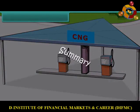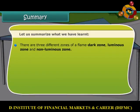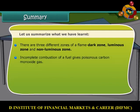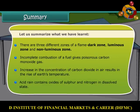Let us summarize what we have learned. There are three different zones of a flame: the dark zone, luminous zone, and non-luminous zone. Incomplete combustion of a fuel gives poisonous carbon monoxide gas. An increase in the concentration of carbon dioxide in air results in a rise in Earth's temperature. Acid rain contains oxides of sulfur and nitrogen in dissolved state.